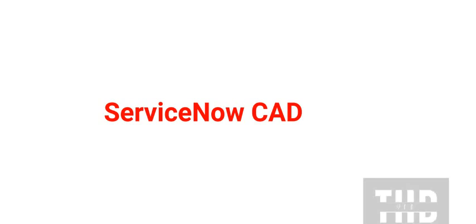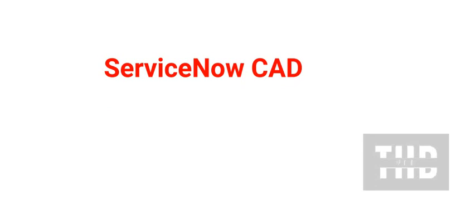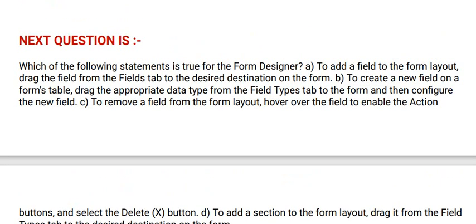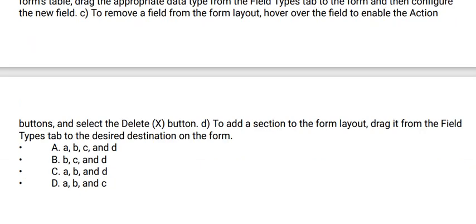Today's question is: which of the following statements is true for the form designer? Option A: to add a fill to the form layout, drag the fill from the fill's tab to the desired destination on the form. Option B: to create a new fill on a form's table, drag the appropriate data type from the fill types tab to the form and then configure the new fill. Option C: to remove a fill from a form layout, hover over the fill to enable the action buttons and select the delete button. Option D: to add a section to the form layout, drag it from the fill type tab to the desired destination on the form.